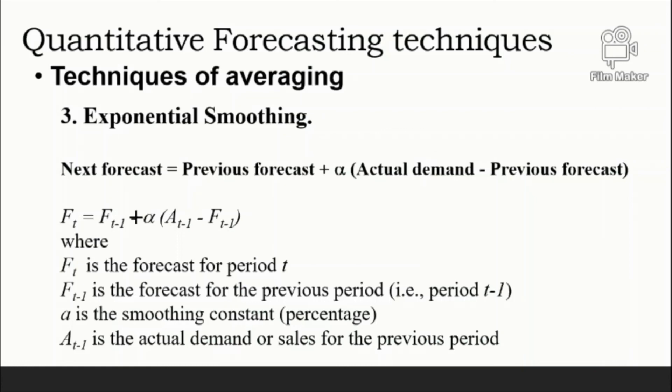Commonly used values of alpha range from 0.05 to 0.50. Low values of alpha are used when the underlying average tends to be stable. Higher values are used when the underlying average is susceptible to change.